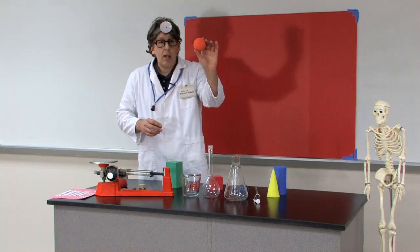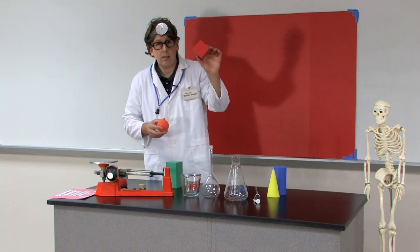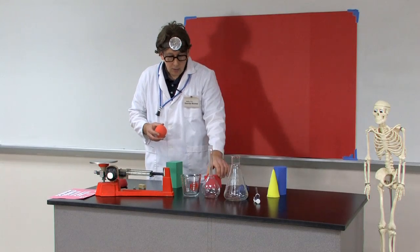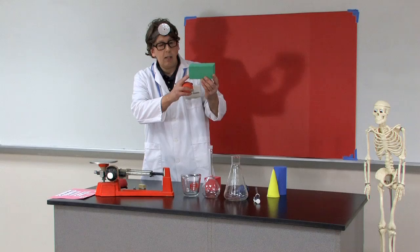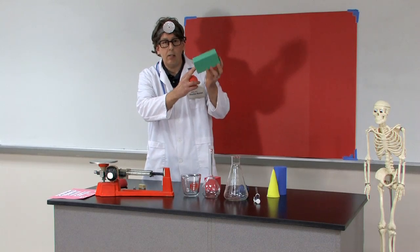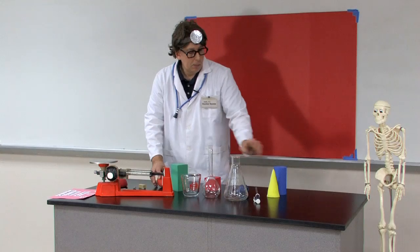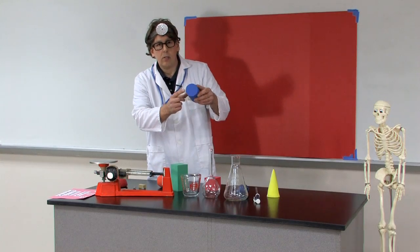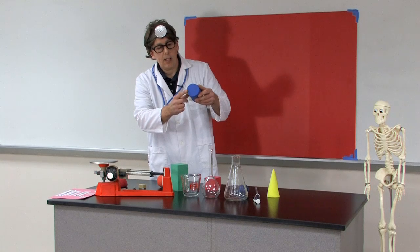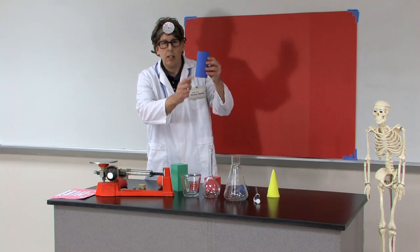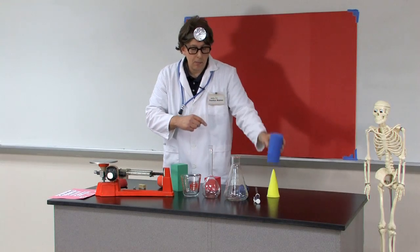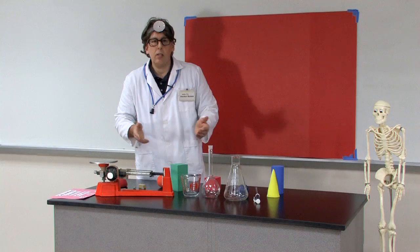Four-thirds pi r cubed, right? We've got side cubed for the cube. We've got the length times width times height for the parallelepiped. We've got the circumference of the circle. In this case, the area of the circle. So area pi r squared times the height for the volume of the cylinder.